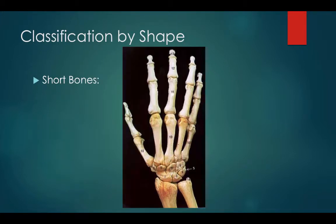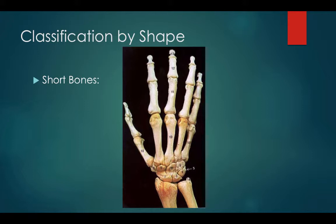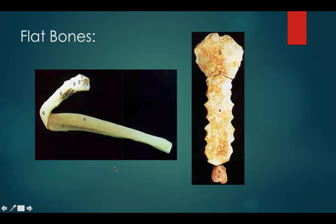Now let's talk about classification by shape. The four basic shapes are short bones, long bones, flat bones, and irregular bones. Here we have a picture of the hand. The carpal bones, number five, are classified as short bones — usually round or cuboidal in shape. Other examples of short bones would be the patella or the tarsal bones of the ankle. Here we have the flat bones: on the right-hand side the sternum — the manubrium, the body, and the xiphoid process — and on the left-hand side a rib. Ribs are classified as flat bones. Another example of a flat bone may be the scapula.